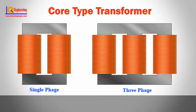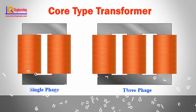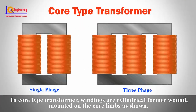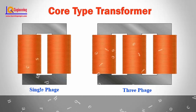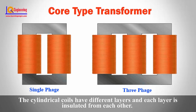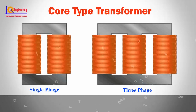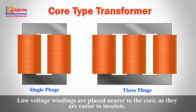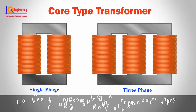Core type transformer: In a core type transformer, windings are cylindrical, wound on the core limbs as shown. The cylindrical coils have different layers and each layer is insulated from each other. Low voltage windings are placed nearer to the core as they are easier to insulate.